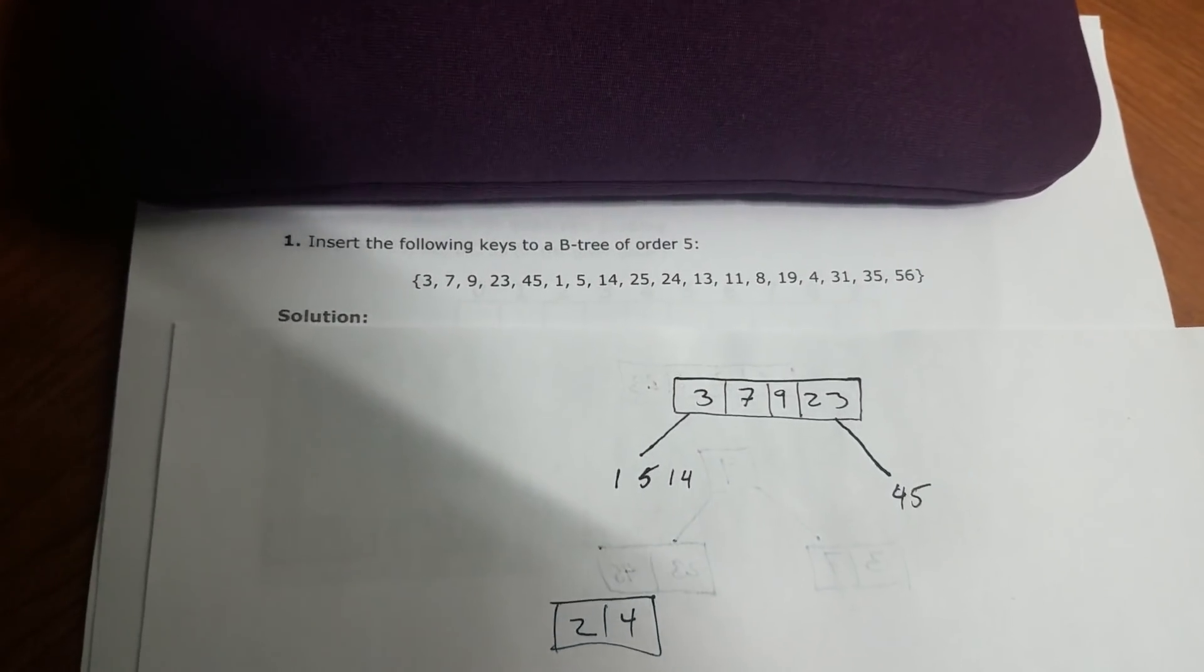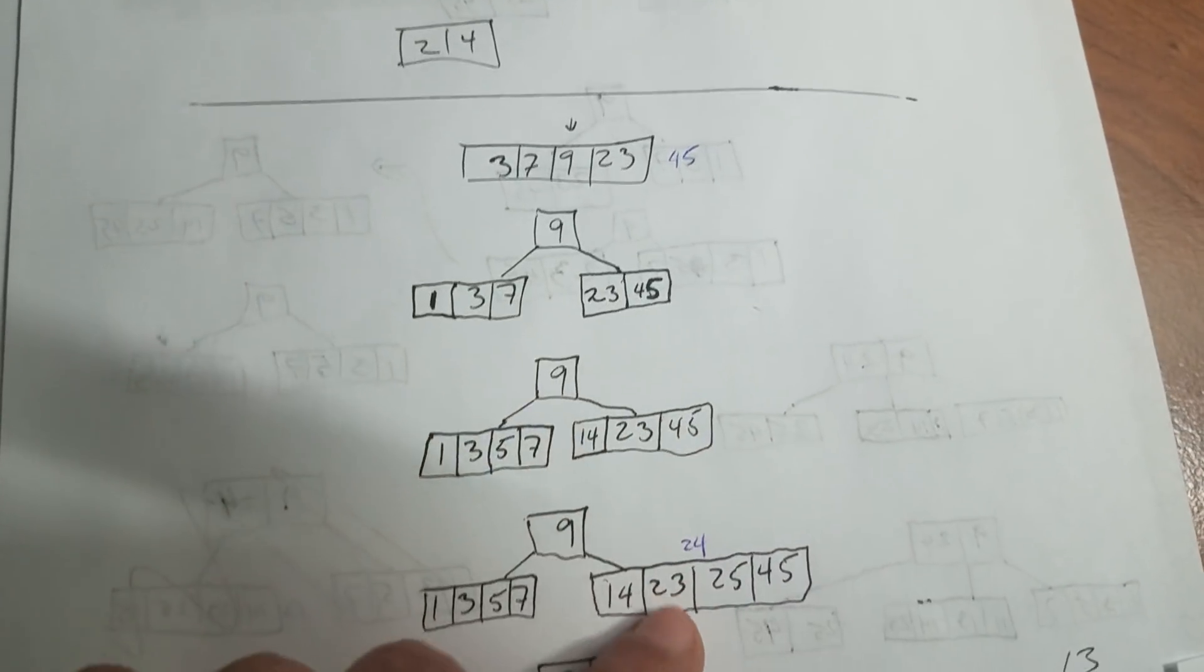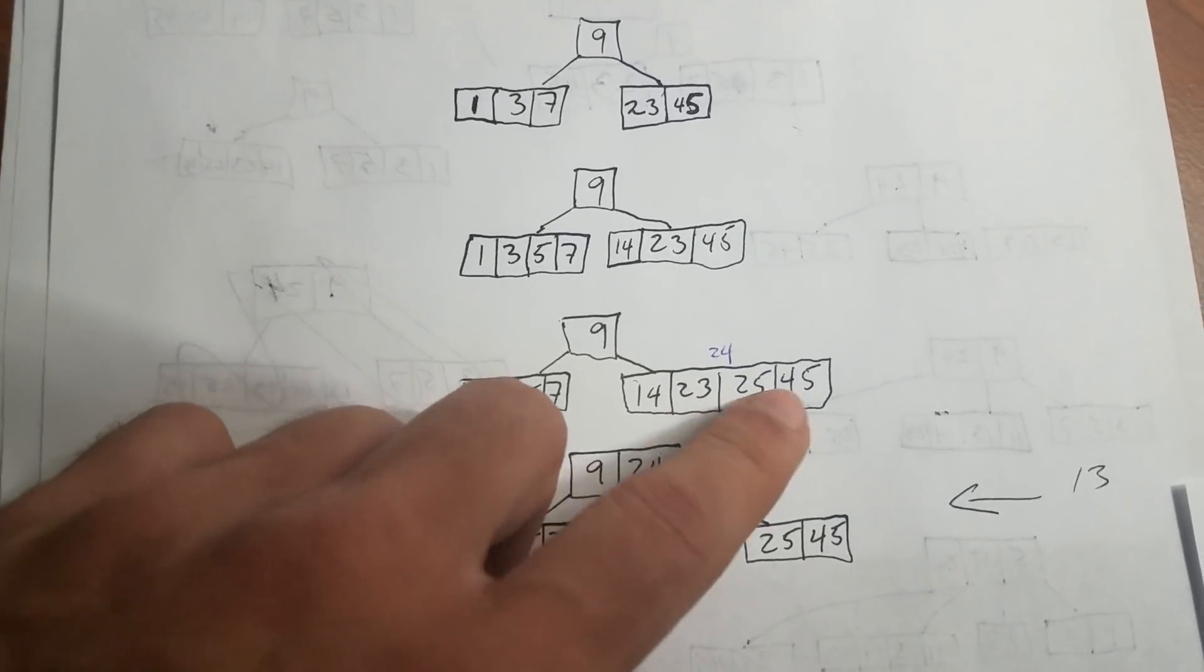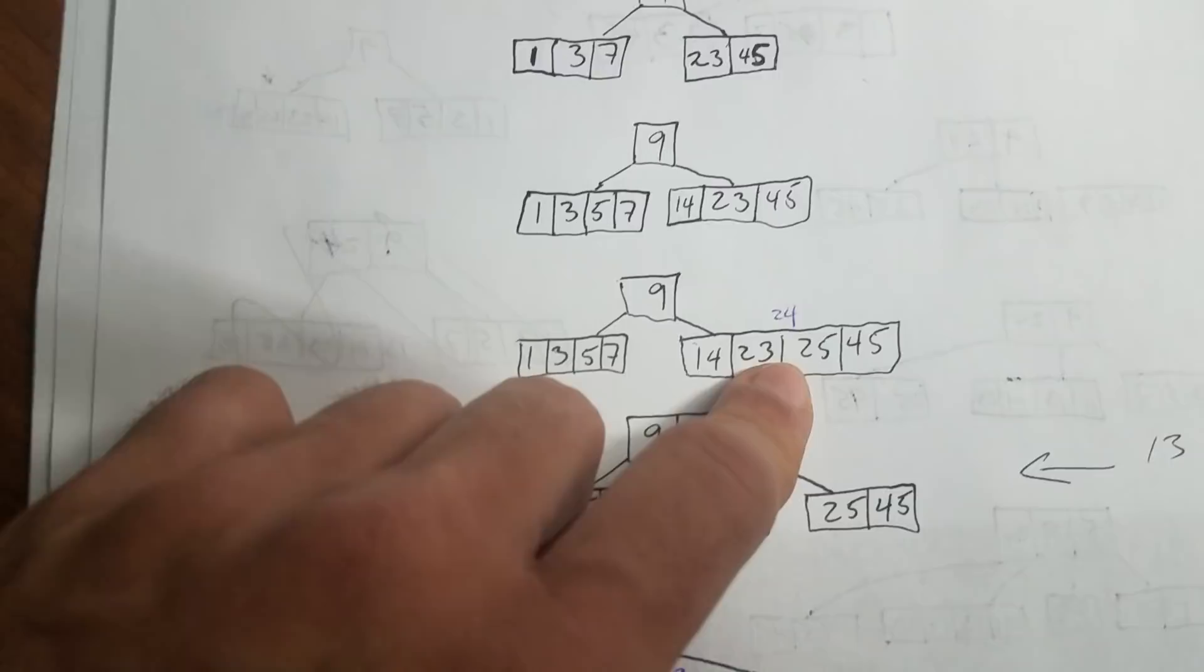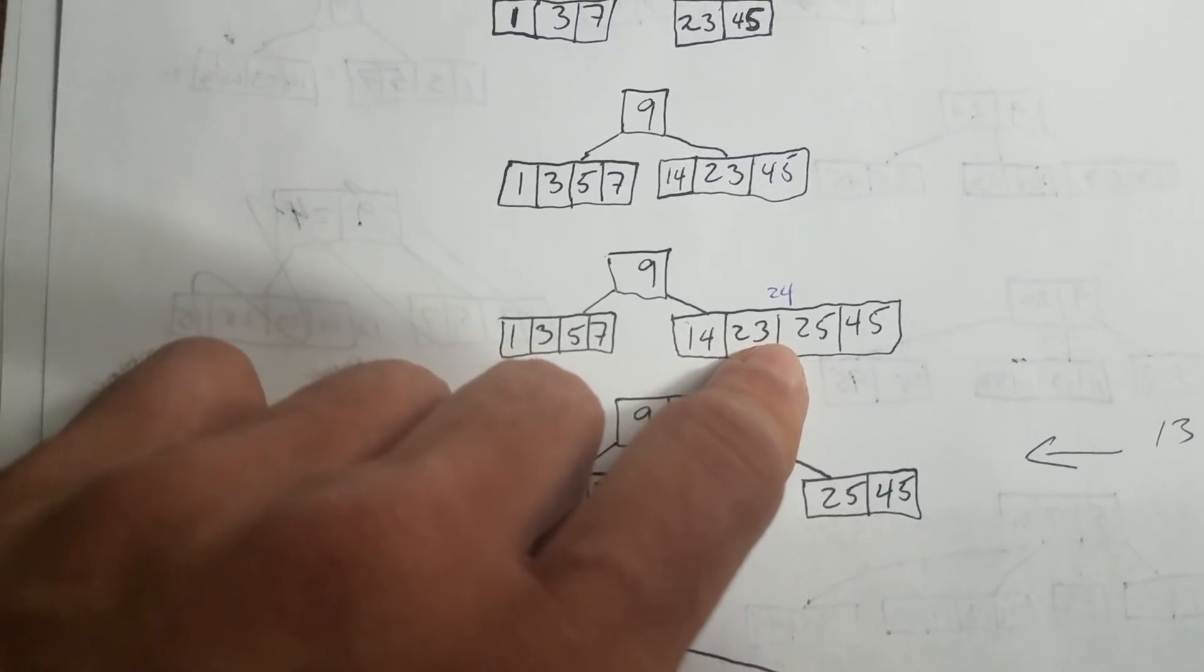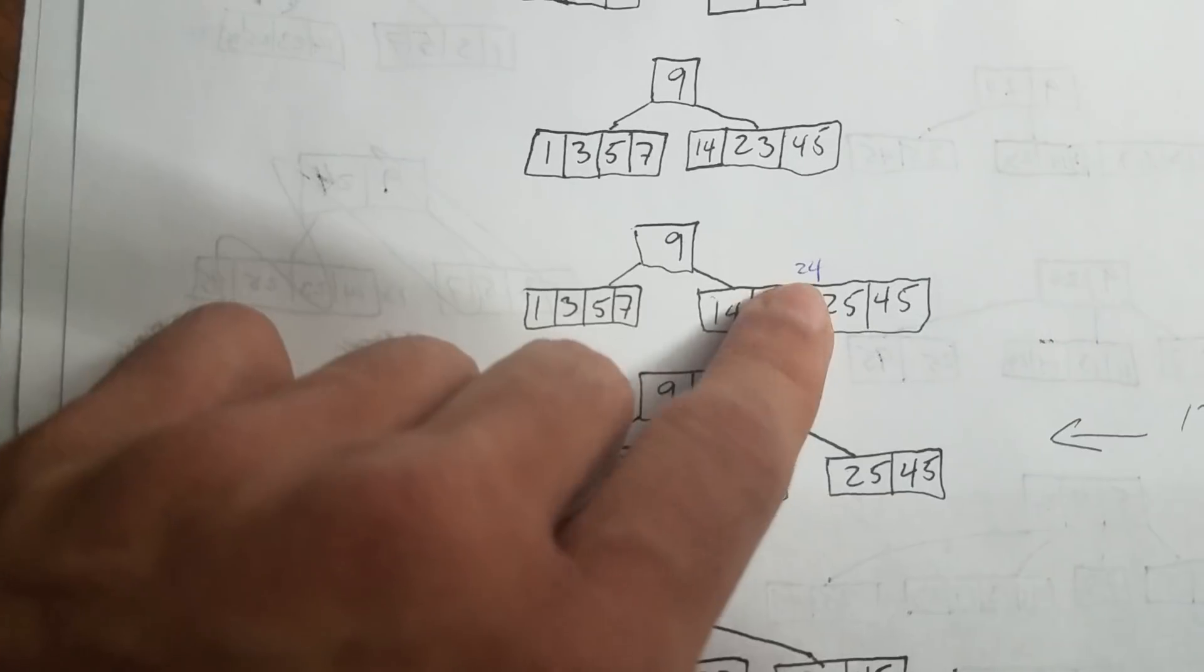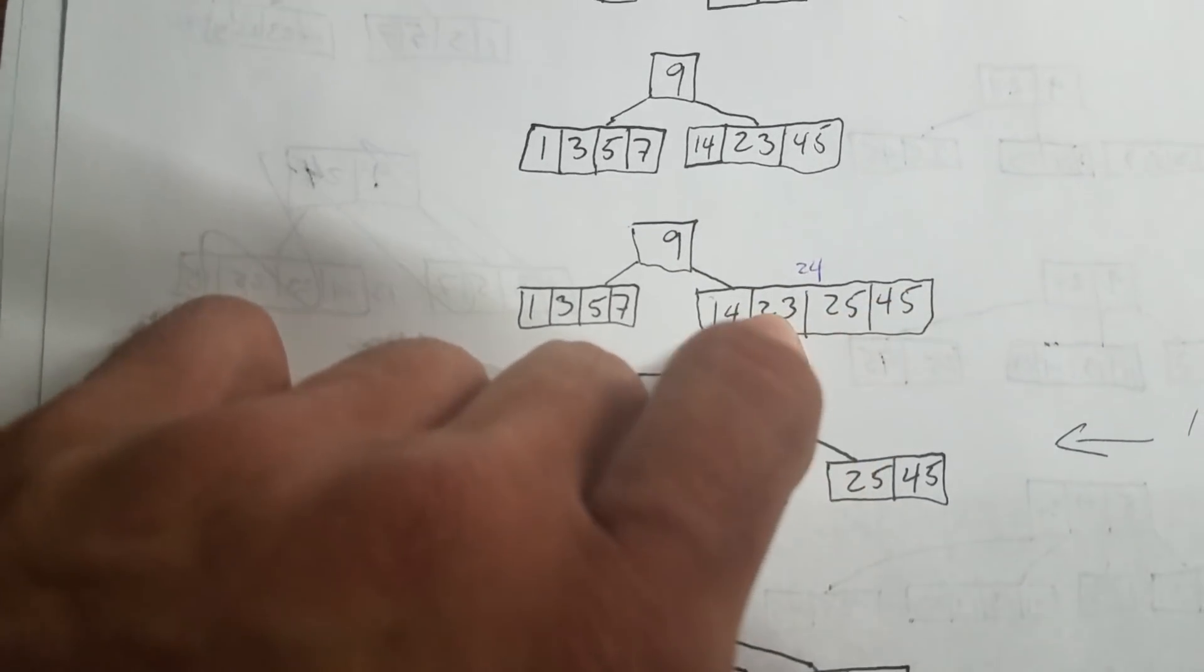Now the next one is a problem. The next one we have 24. If you take a look here, 24 is in the middle of these four nodes, of these four keys. And this node cannot contain more than four keys. Therefore we have to branch out. 24 is going to be the middle number.